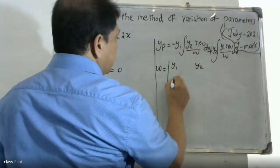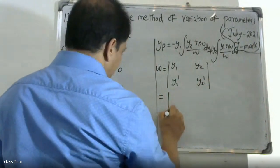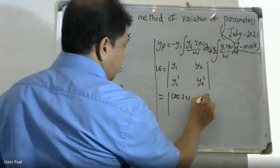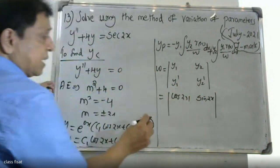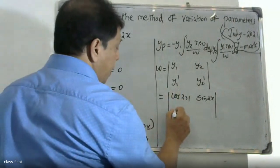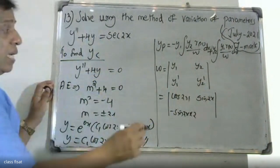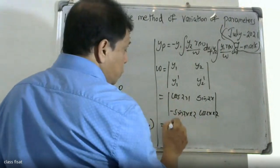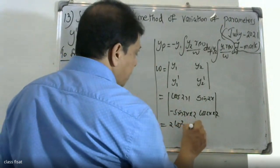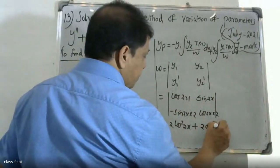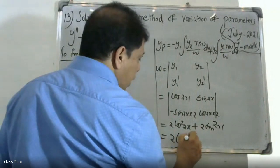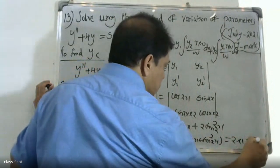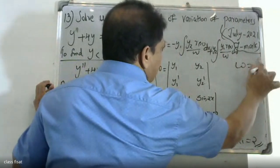Here y1 is cos 2x and y2 is sin 2x. The Wronskian W is the determinant of y1, y2, y1 dash, y2 dash. y1 dash is minus sin 2x into 2, and y2 dash is cos 2x into 2. Cross-multiplying gives 2 cos squared 2x plus 2 sin squared 2x, which equals 2 times 1, so W is equal to 2.